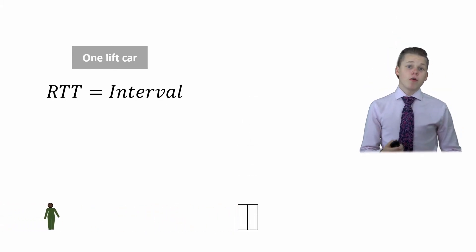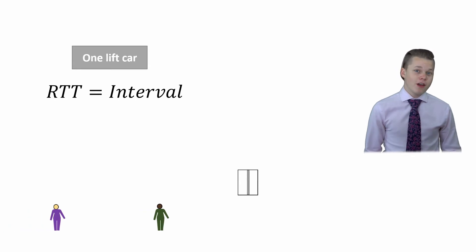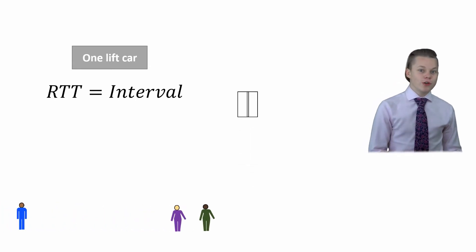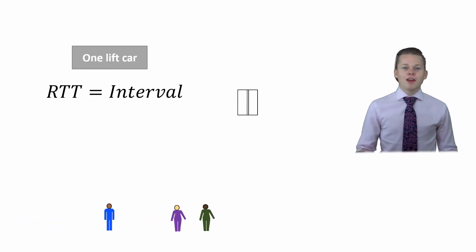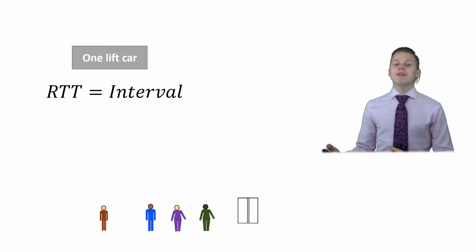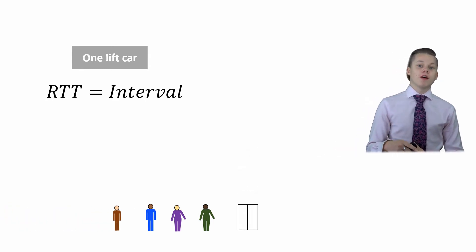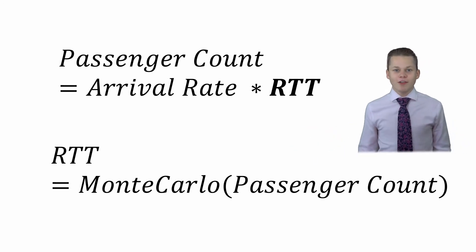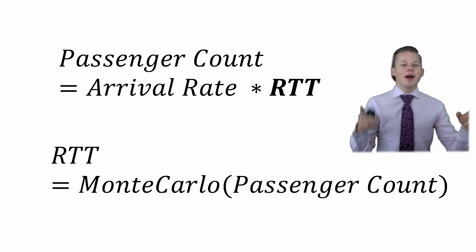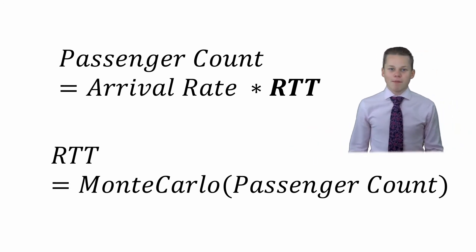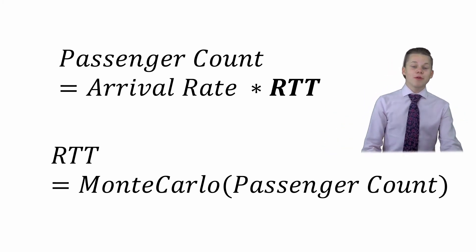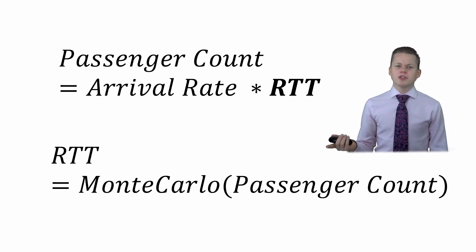If the passengers are arriving at a constant rate the round trip time is proportional to the passenger count. If the lift took longer more people would be waiting to get in the lift when it returns to the main terminal so the passenger count is higher. So to find a passenger count we need a round trip time. And how do we find a round trip time? We use a Monte Carlo like we were just talking about. But wait. The Monte Carlo needs passenger count as an input.